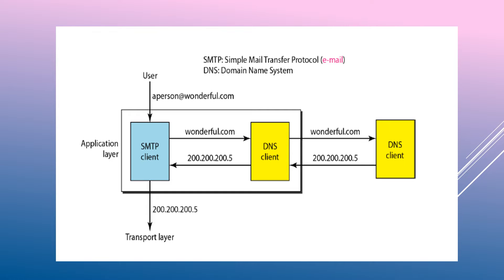The user has an address like someone at redwonderful dot com. The SMTP client at the application layer asks for it, then it goes to the DNS client, which responds if the mapping exists, and the process continues via the transport layer and internet layer.